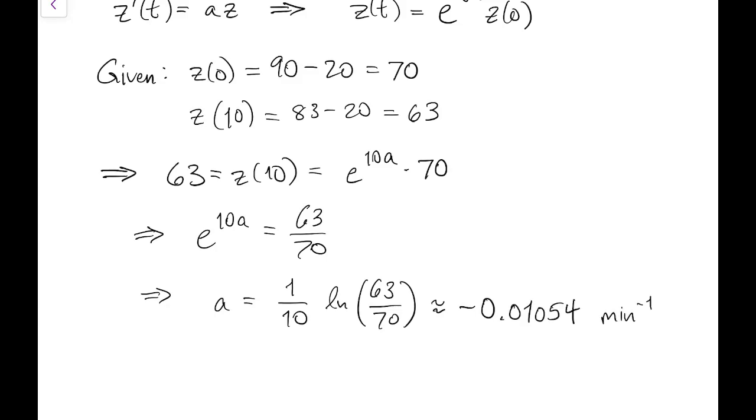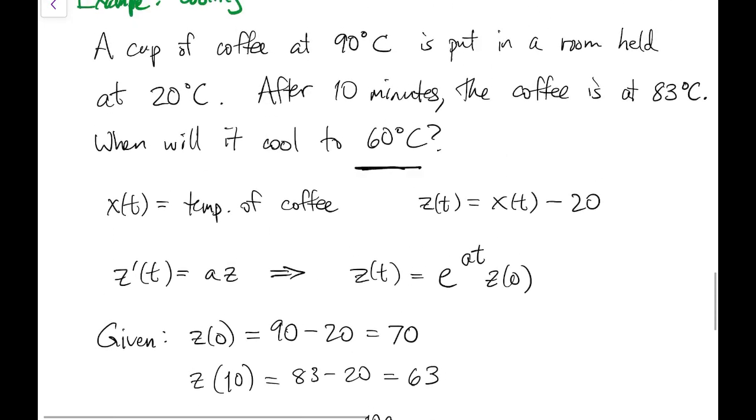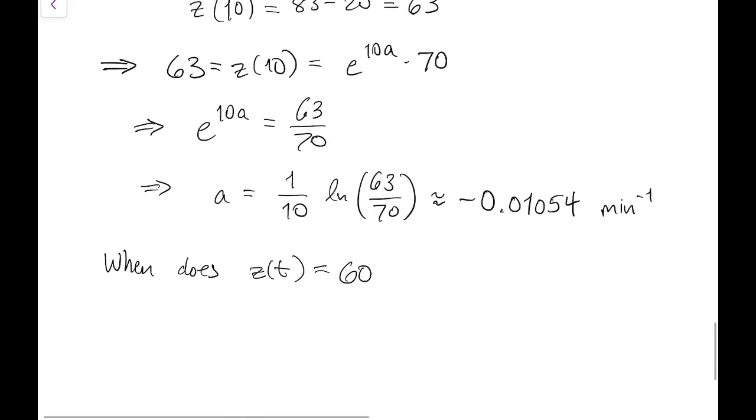Now that we know z naught and a, we know everything we want to know about the solution. So the original question is, when does z equal 60 minus the room temperature, 20? So when does z equal 40? So you put in 40 for z, and you can solve for t.